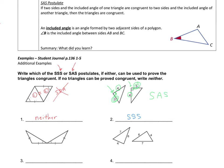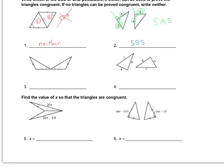Taking a look at the next one. Again, here's a situation where I have this angle to this one, this side to this side, but it's not an included angle. So on this one, I have nothing that shows any congruence as far as the two triangles. So this one is neither.